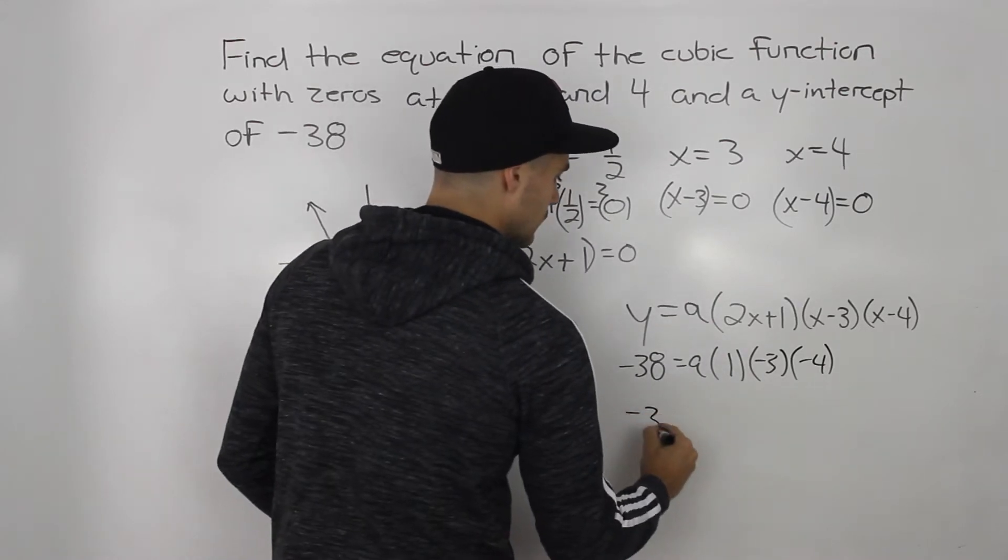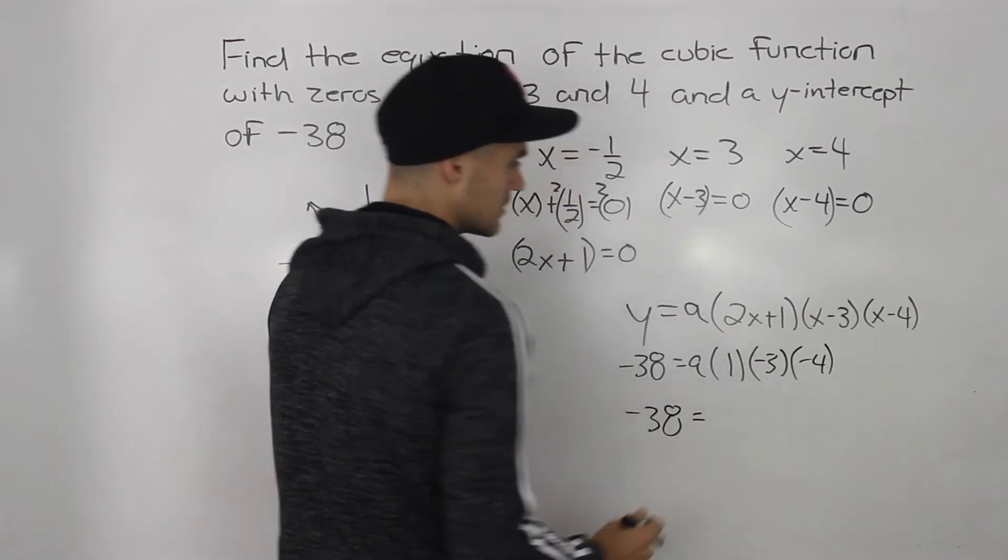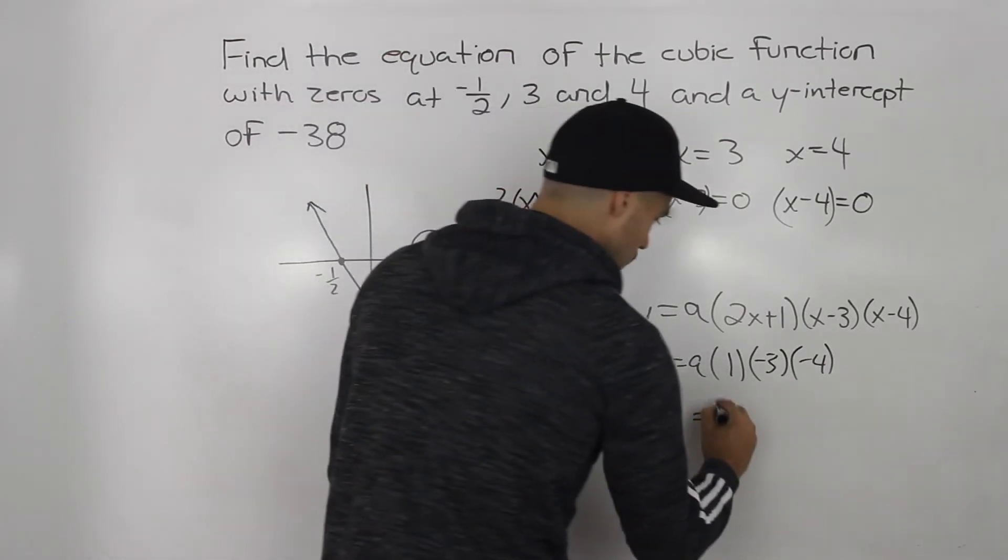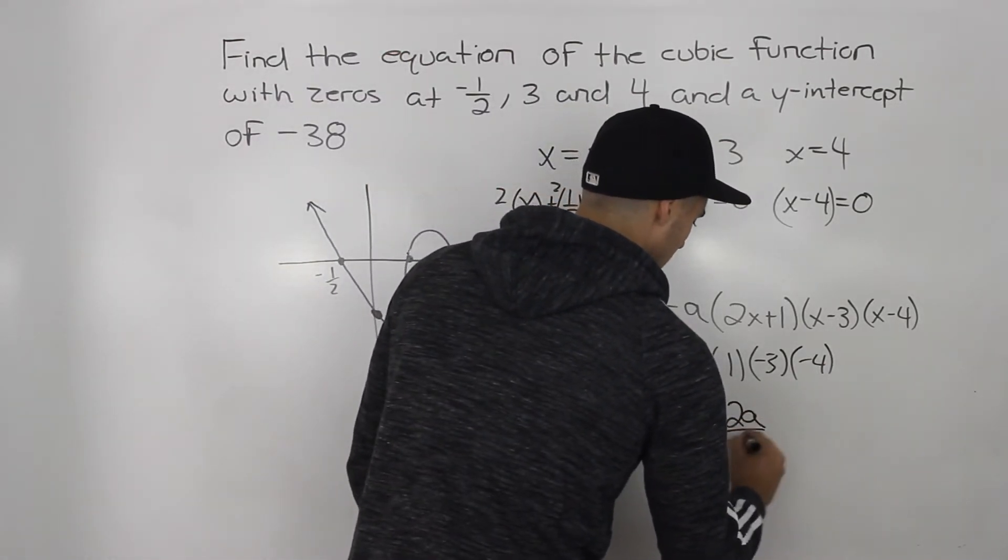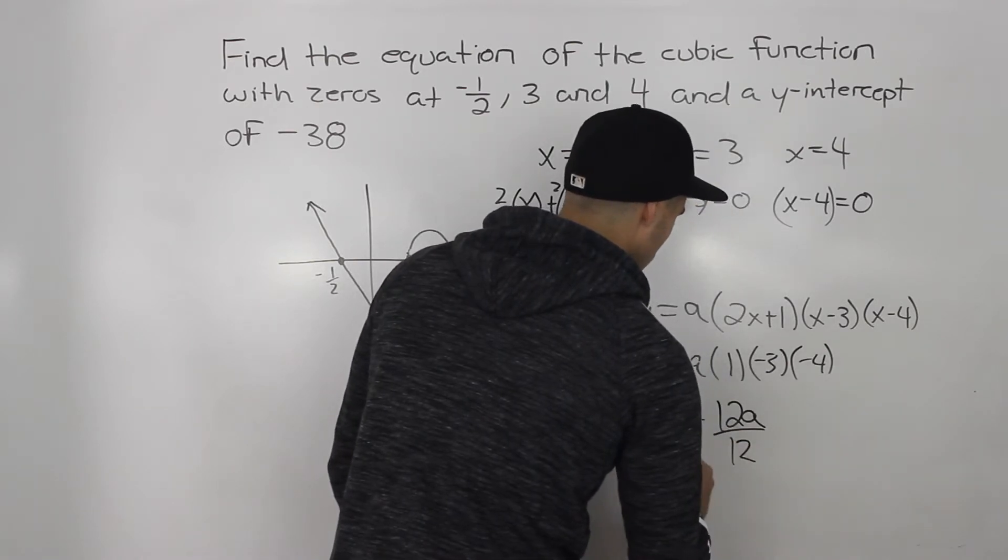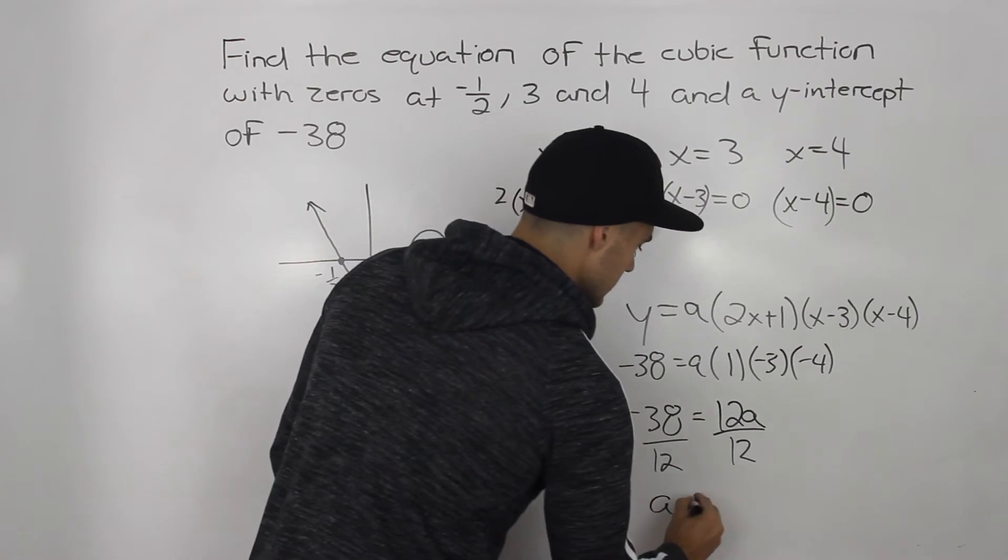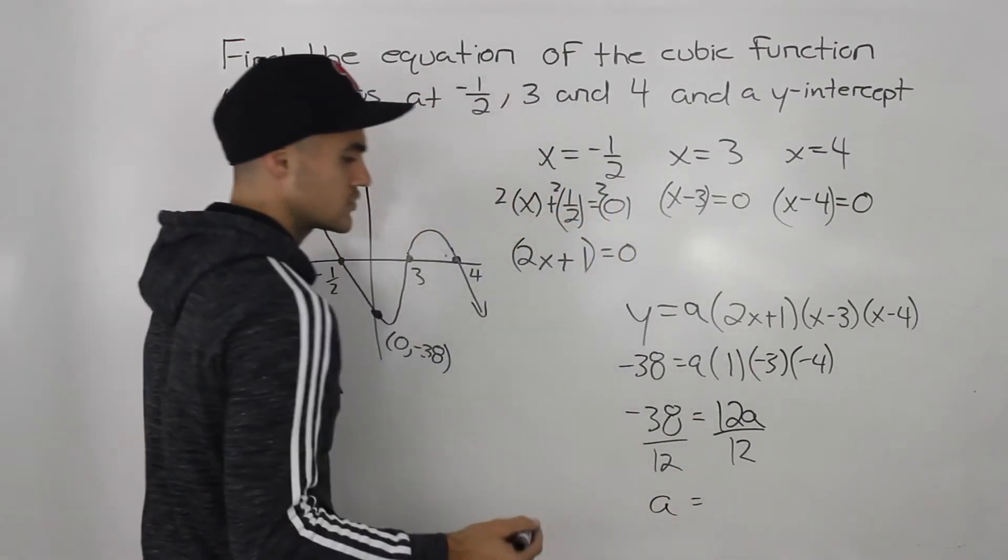So we got negative 38 equals one times negative three times negative four gives us 12, positive 12. So we'd have 12a here. And then if we divide both sides by 12,